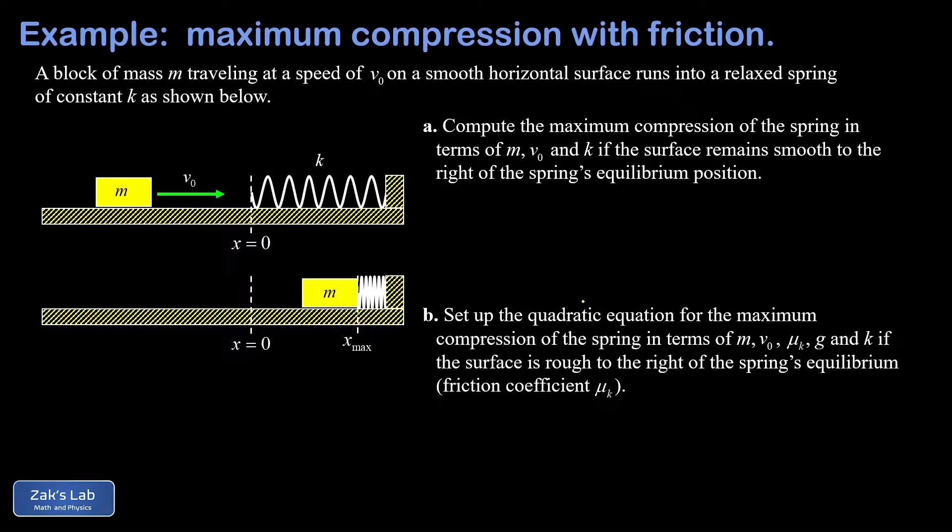In this video, we're looking at a very general spring compression problem. We have a mass m traveling on a smooth surface with an initial speed of v0. It runs into a horizontal spring that's currently relaxed with a spring constant of k. The mass is going to squish that spring, which eventually brings it to a stop.